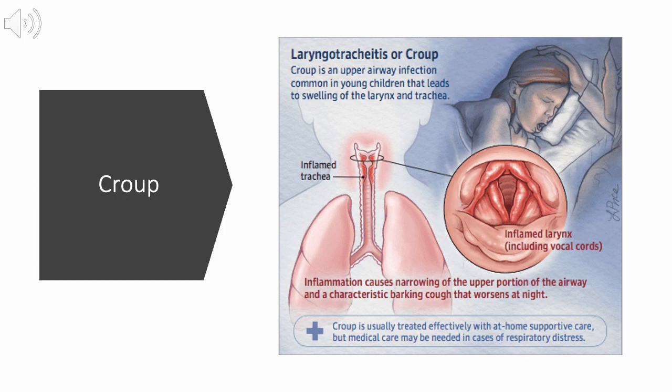Croup is most typically caused by parainfluenza virus, but can also be caused by RSV, influenza, adenoviruses, or enteroviruses. Croup often begins as a typical cold, and with enough inflammation a child can develop a loud barking cough further aggravated by crying, anxiety, and agitation, setting up a cycle of worsening symptoms.